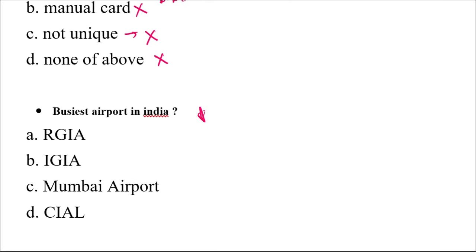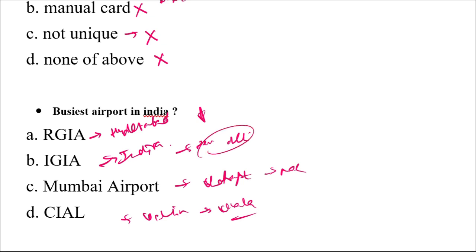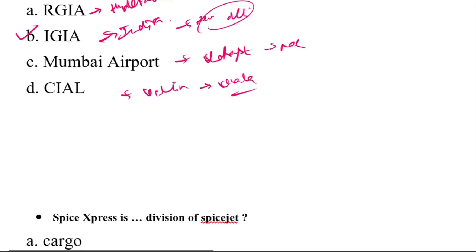The busiest airport in India: RGIA is the Rajiv Gandhi International Airport in Hyderabad. IGIA is the Indira Gandhi International Airport in New Delhi. Bombay Airport is Chhatrapati Shivaji Airport in Maharashtra, and CIAL is Cochin International Airport Limited in Kerala. The busiest airport is New Delhi's Indira Gandhi International Airport, so the correct answer is IGIA.